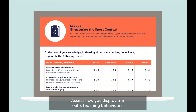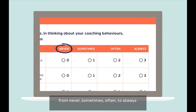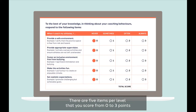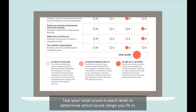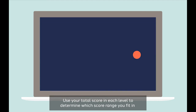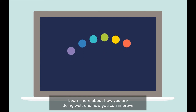Assess how you display life skills teaching behaviors, from never, sometimes, often, to always. There are five items per level that you score from zero to three points. Use your total score in each level to determine which score range you fit in, and learn more about how you are doing well and how you can improve.